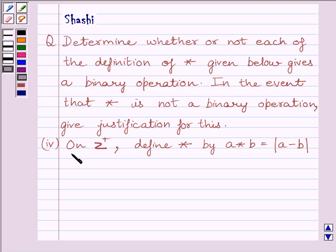Fourth part is, on Z plus, where Z plus is the set of all positive integers, define star by A star B is equal to modulus of A minus B.